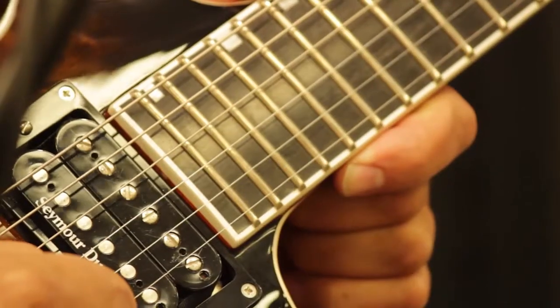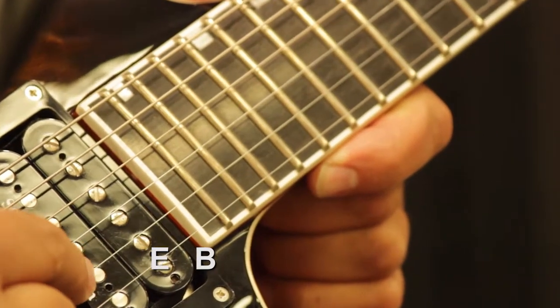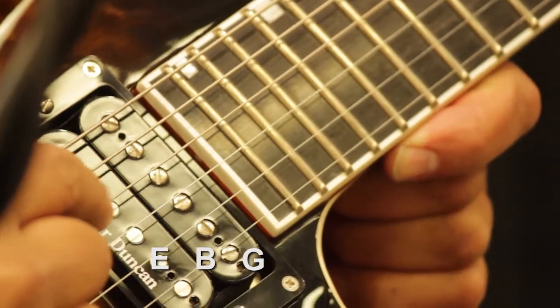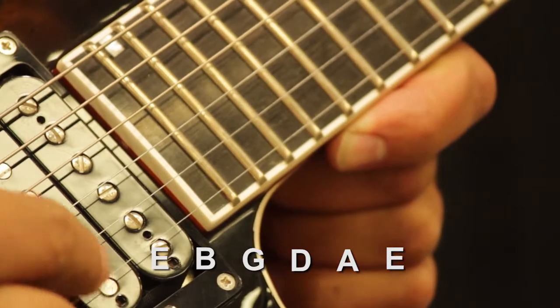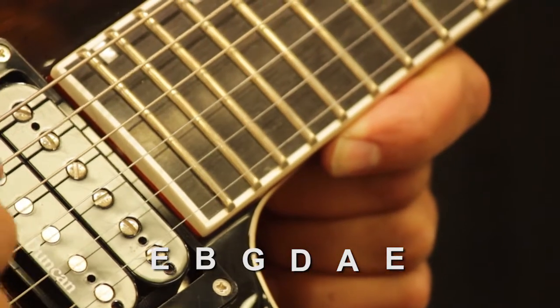Notes of the electric guitar are E, B, G, D, A, and E. Or Easter bunnies get dessert at Easter. That's easier to remember.